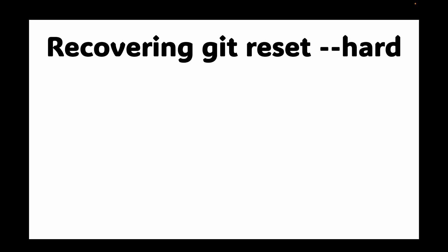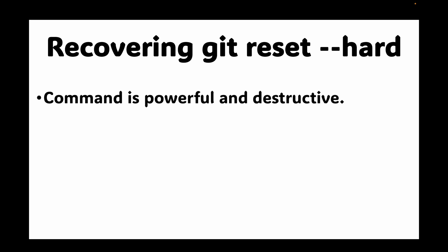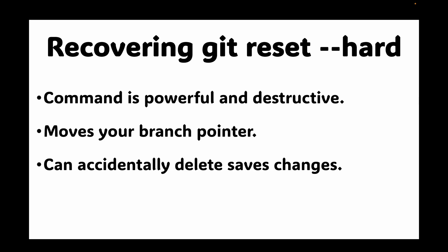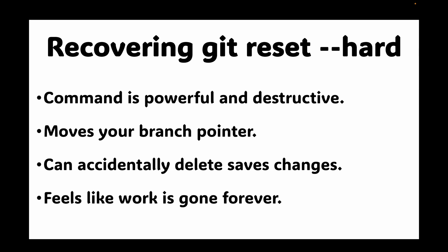Now let's talk about the second most common problem: recovering from an accidental `git reset --hard`. This command is very powerful and destructive if not used carefully. It not only moves your branch pointer but can also accidentally delete saved changes. If you run this command by mistake, it can feel like your work is gone forever. However, not all is lost — git has a safety net called the reflog, which is a local history of every place your HEAD has been.